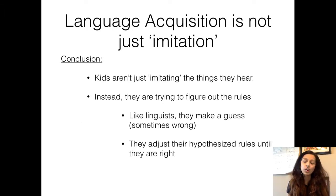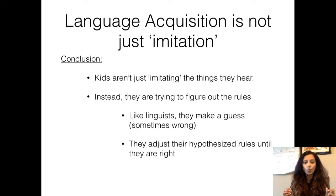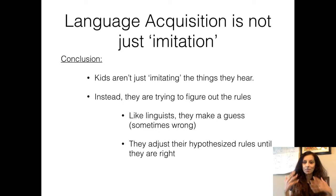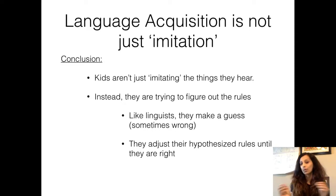The children are actually trying to figure out the rules, just like you and I are trying to figure out the rules in this class — phonological rules, rules of phonetic transcription. We are painfully realizing that what we did subconsciously when we were five years old is not so easy when you consciously revisit it. What children are doing is making a guess, and sometimes the guess is wrong — that's when you get a form that is not correct, like 'goed' or 'gooses.'